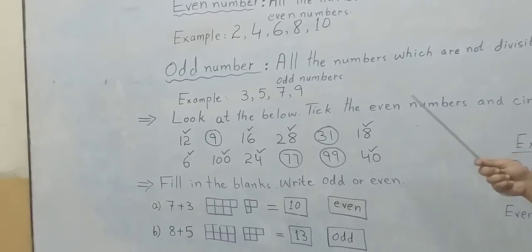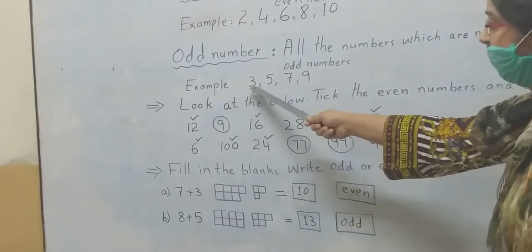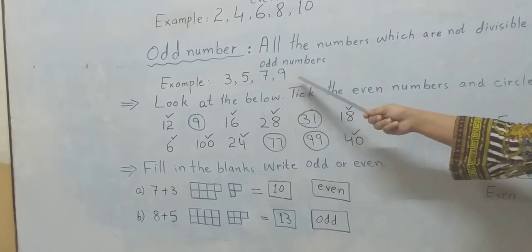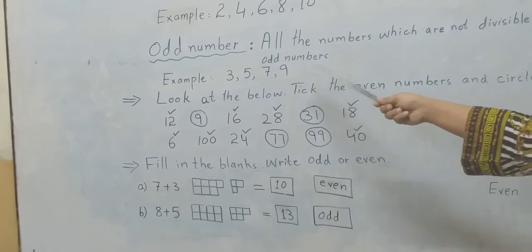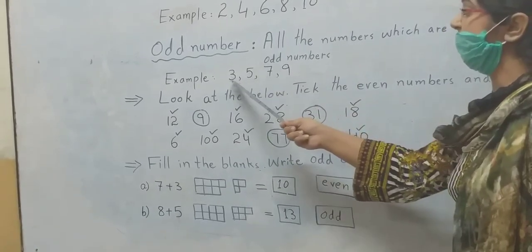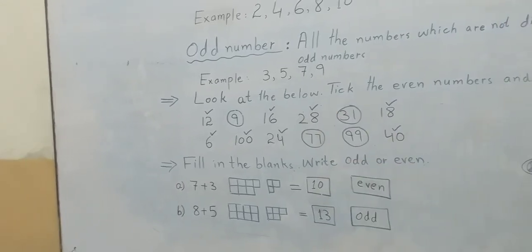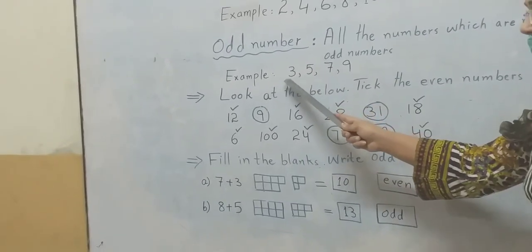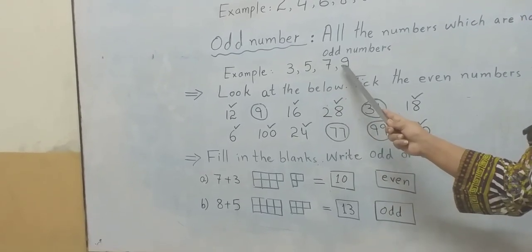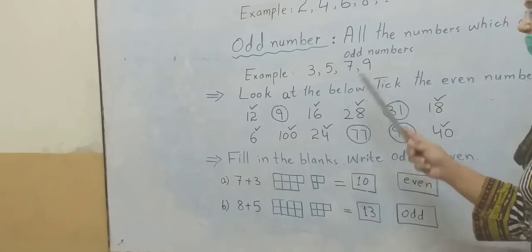Here are the examples of odd numbers: three, five, seven, nine. Dear students, you might have noticed that these numbers only come in their own tables — three, five, seven, and nine. Although nine also comes in the table of three as well.